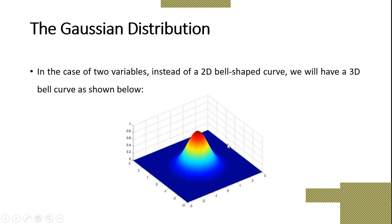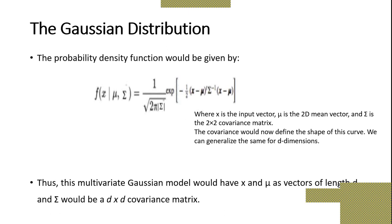In the case of two variables, instead of a 2D bell-shaped curve we will have a 3D bell curve. The probability density function will be given by f(x; mu, sigma) equals 1 divided by the square root of (2 pi times |sigma|), times exponential of negative one-half (x minus mu) transposed sigma inverse (x minus mu), where x is the input vector, mu is the two-dimensional mean vector, and sigma is the 2 by 2 covariance matrix. We can generalize the same for d-dimensional data.